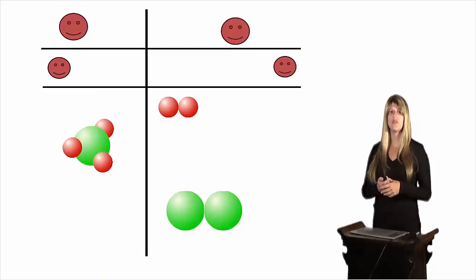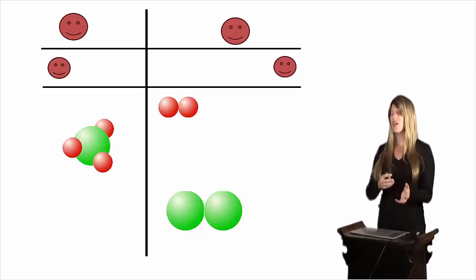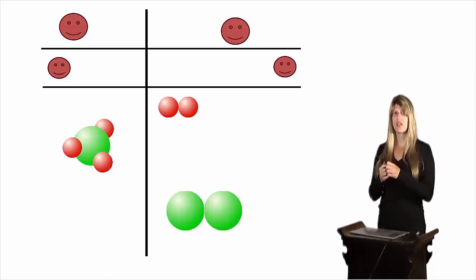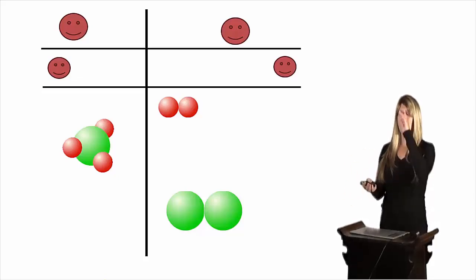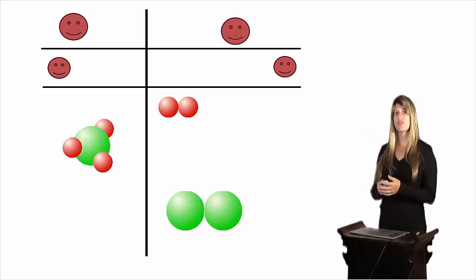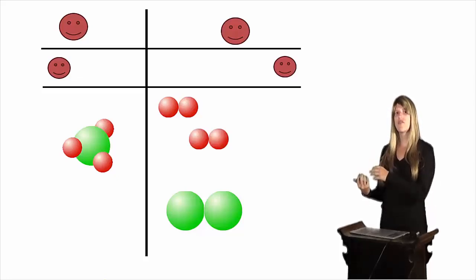Let's take a look at another example, which is a little bit more difficult. Our reactant is something that has a green circle with three red circles attached, and we're trying to make a product that has pairs of green circles and pairs of red circles. Right now we have more red circles on the left than on the right, and more green circles on the right than on the left. Let's start off with the red circles — we have three attached to that green circle on the left, however we only have two in the products. We want to add more to our product side, but we can only add them in pairs because they come in pairs. If we add them in pairs, we now have four on the right side and we only have three on the left side.